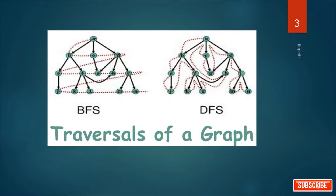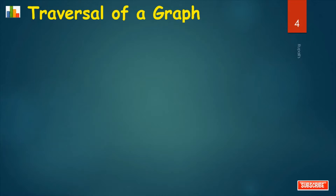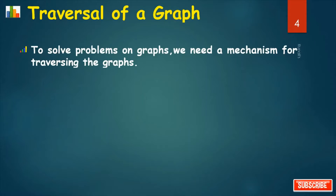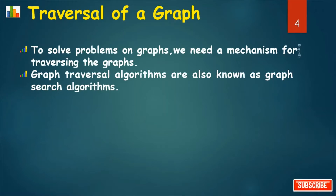In computer science, graph traversals — also known as graph search — refers to the process of visiting, that is checking and updating each vertex in a graph. Such traversals are classified by the order in which vertices are visited. Graph traversal algorithms are also known as graph search algorithms.